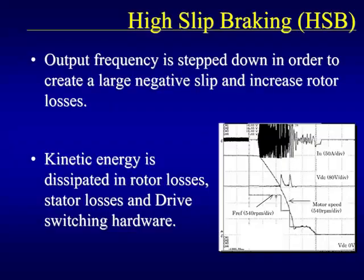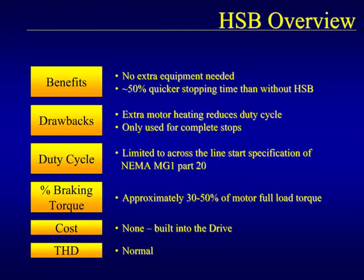High-slip braking is a braking method that uses an algorithm to maximize the motor losses during braking. Output frequency is stepped down at various intervals to increase the negative slip in the motor. This large negative slip causes the motor to act as an inefficient generator so that during regeneration, all of the regenerated power is dissipated from the motor itself due to its own inefficiency. High-slip braking is an excellent selection for large inertial loads — no extra equipment is needed and it can provide stopping times approximately 50% faster. Case studies have shown stopping times can be even faster than 50%, resulting from increased braking torque. The major drawback is the increased motor heating, as the majority of the energy is transferred into motor heat.